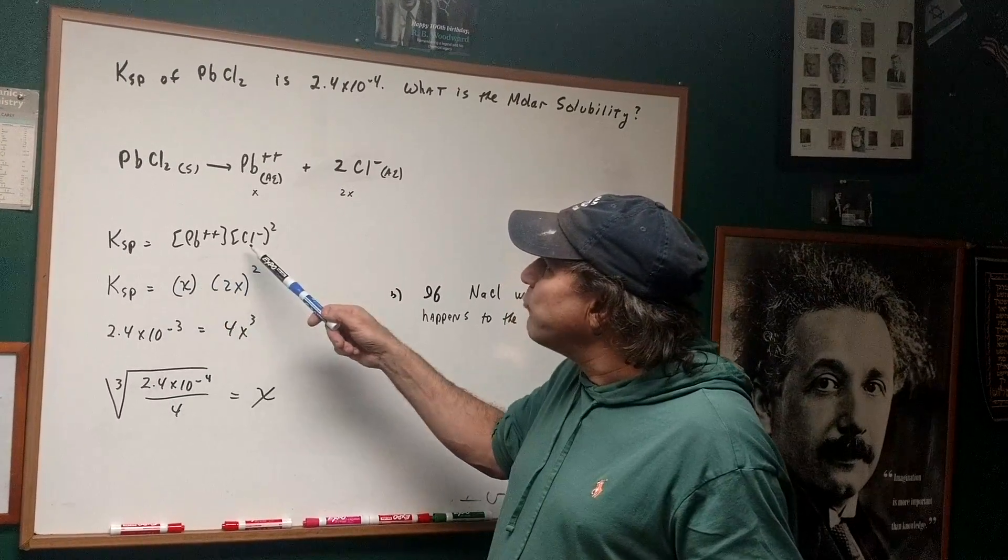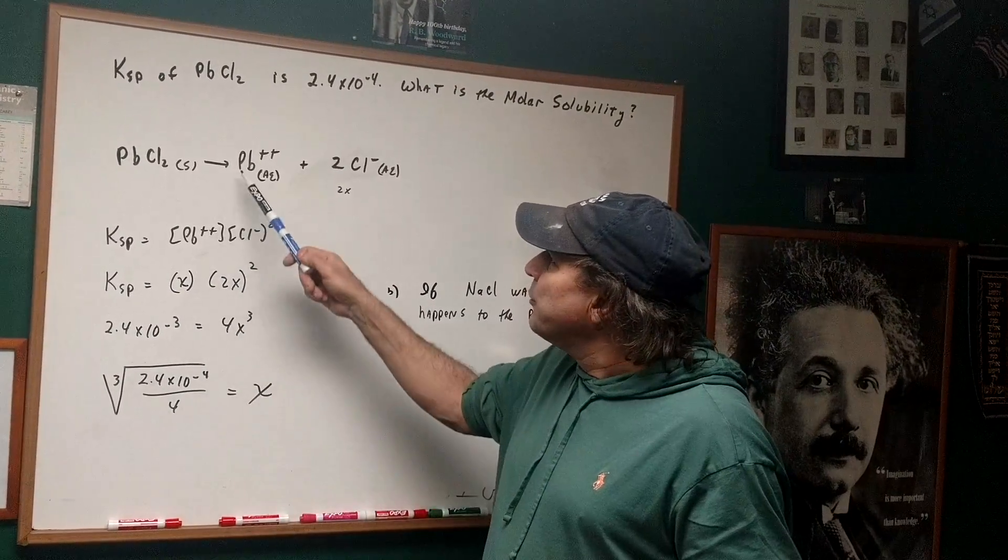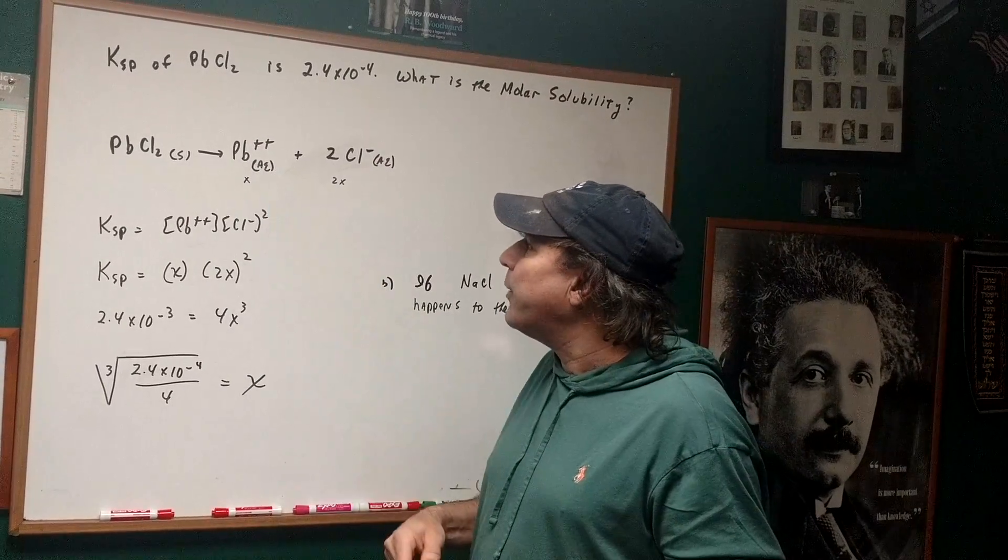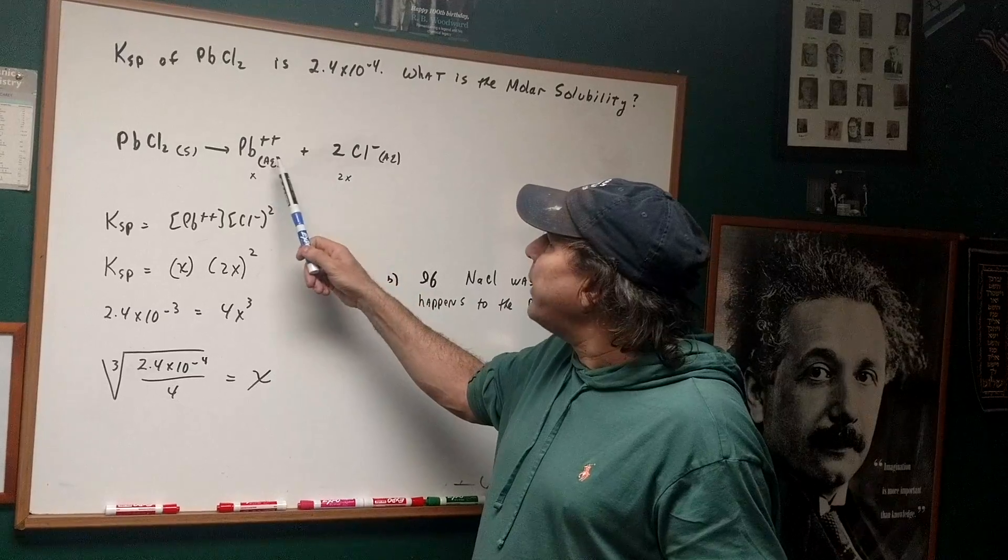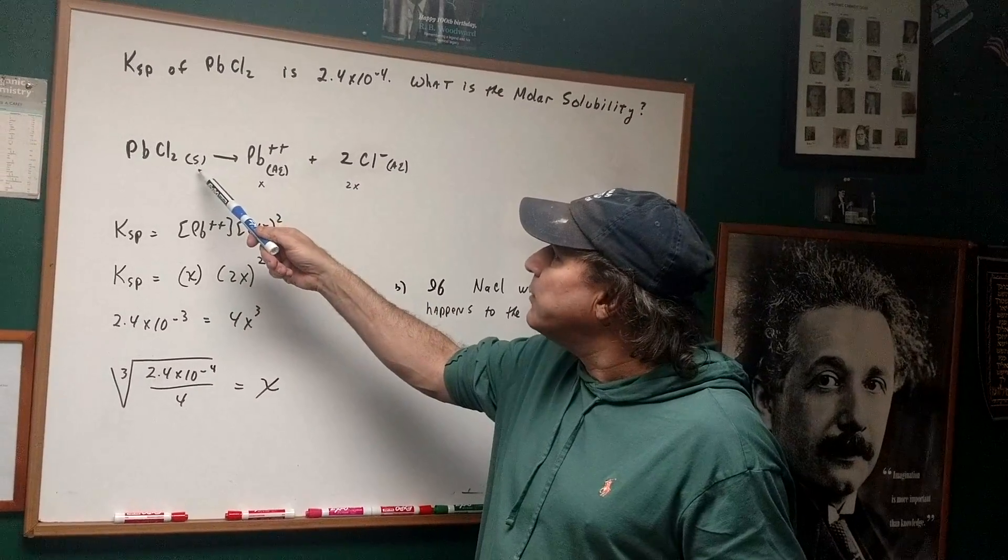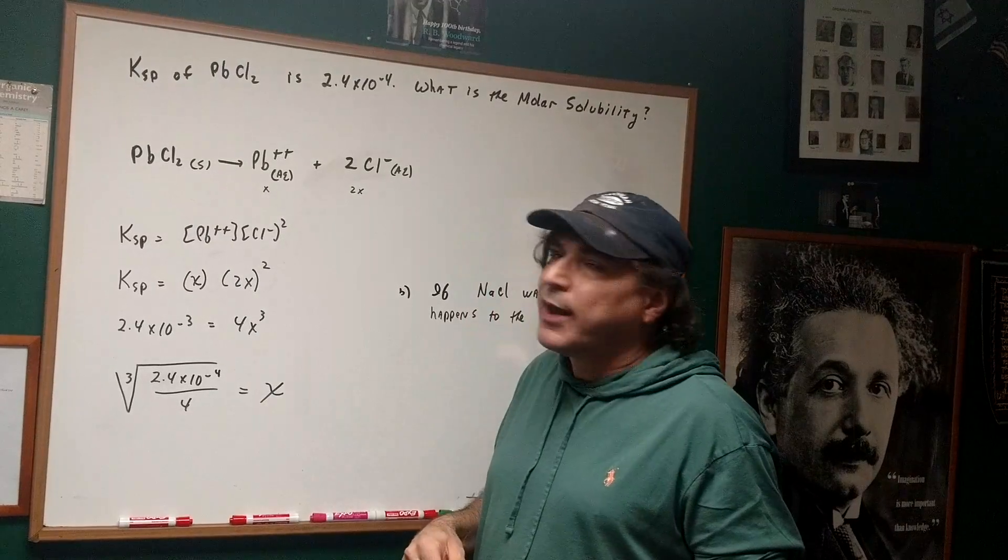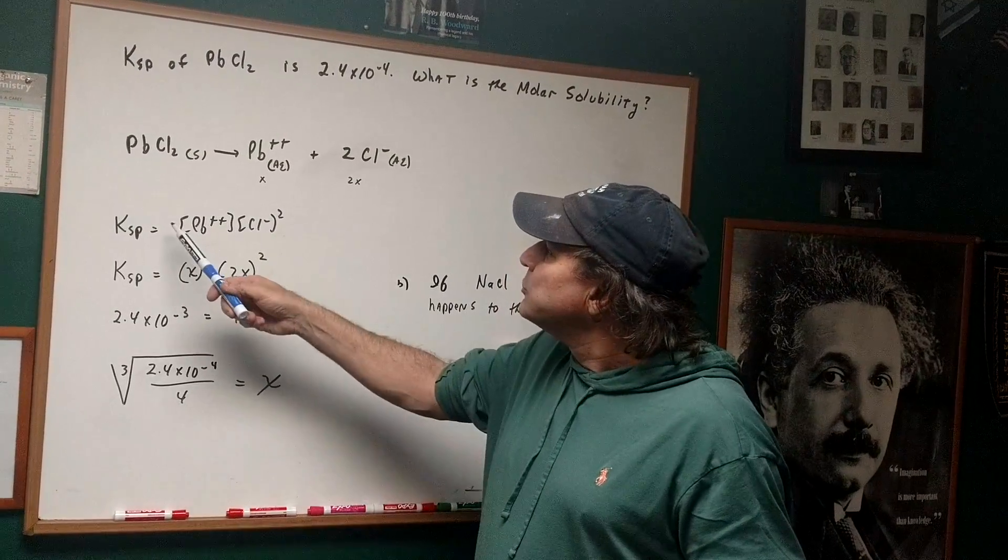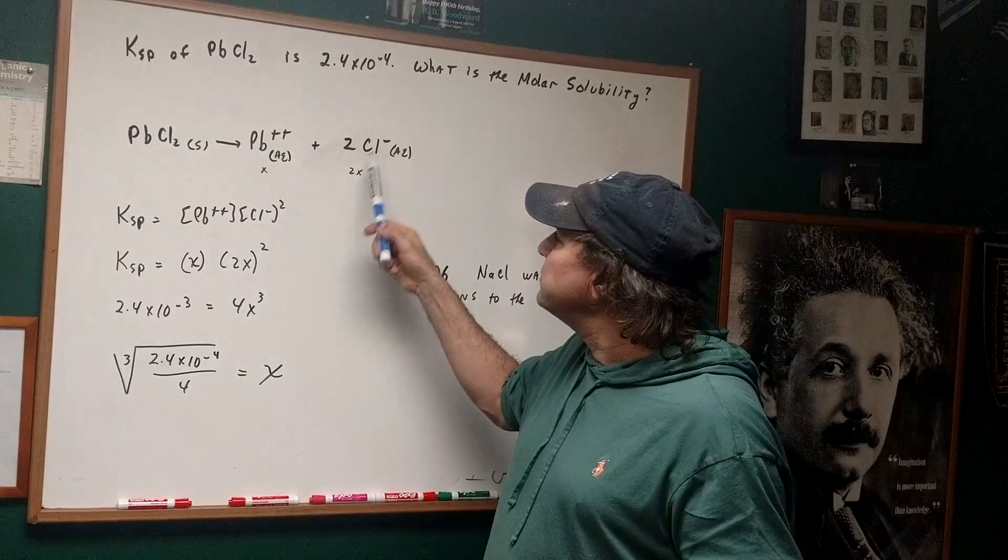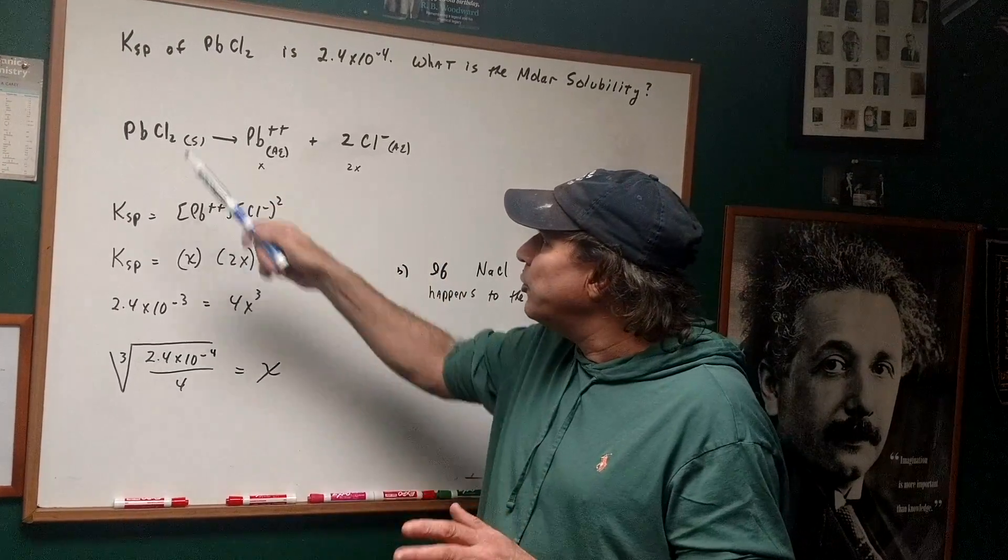The KSP is just an equilibrium expression. It's the products divided by the reactants. The products are ions because it's aqueous, and this is a solid, so you don't use it. Whatever they give you the KSP for, it's for a solid. So the KSP would just be the Pb++ times the Cl- squared, and you don't use the solid.